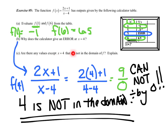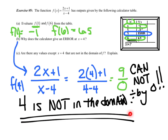Letter C: are there any values except 4 that are not in the domain? Think about it — is there any other number you could plug in to get 0 on the bottom? If you plug in 1, 1 minus 4 is negative 3 — you're allowed to divide by negative 3. If you plug in 2, 2 minus 4 is negative 2 — allowed. There's no other number that gives 0 on the bottom, so 4 is the only value not in the domain.